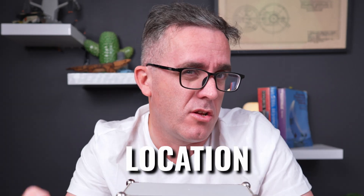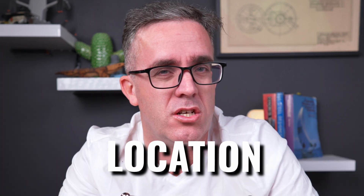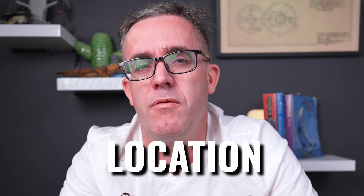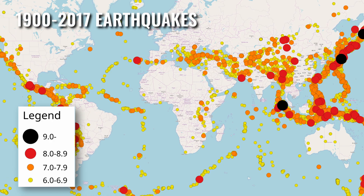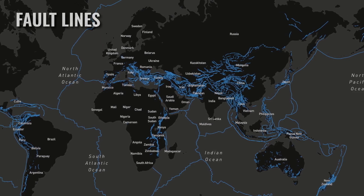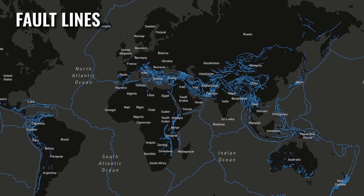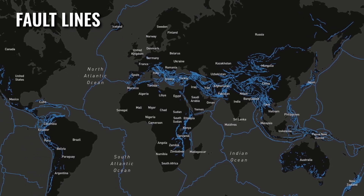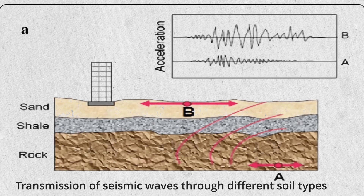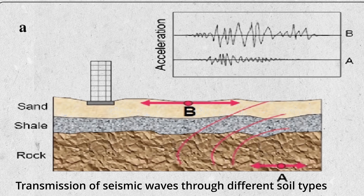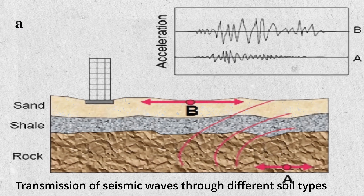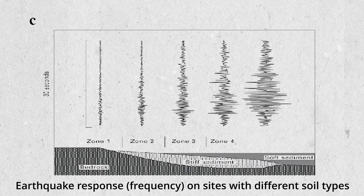In any seismic design — or building design or real estate — it's all about location, location, location. Location will fundamentally define what loads you need to design for. The closer you are to fault lines, the higher the risk and the higher the earthquake you need to design for. So you need to consider where you're designing that structure to work out what loads and design types are required.